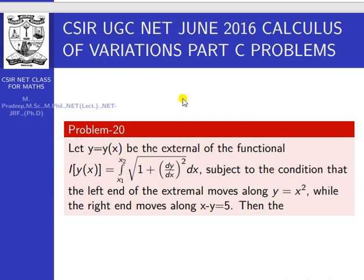Dear friends, today we are going to discuss the June 2016 Part C problem in the topic of calculus of variation. Let y = y(x) be the extremal of the functional I(y(x)) = integral from x1 to x2 of square root of 1 plus (dy/dx)² dx, subject to the condition that the left end moves along y = x² while the right end moves along x minus y = 5.